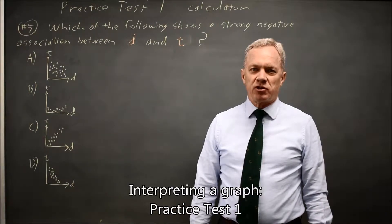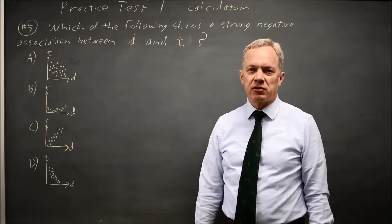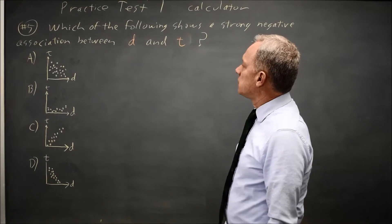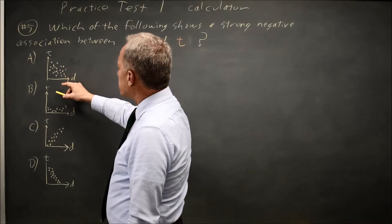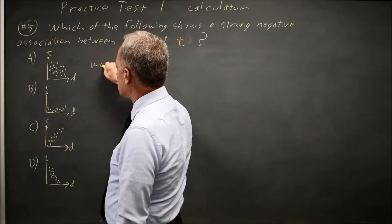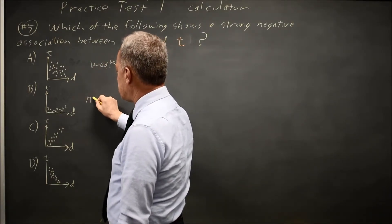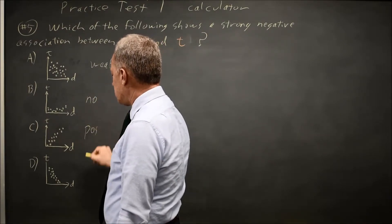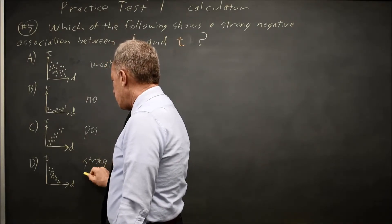This is Calculator Question Number 5 from Practice Test 1. College Board asks which of these four graphs shows a strong negative association between D and T. Choice A is a negative association, but it looks weak. Choice B looks like perhaps no association. C is strong positive, and D is strong and negative.